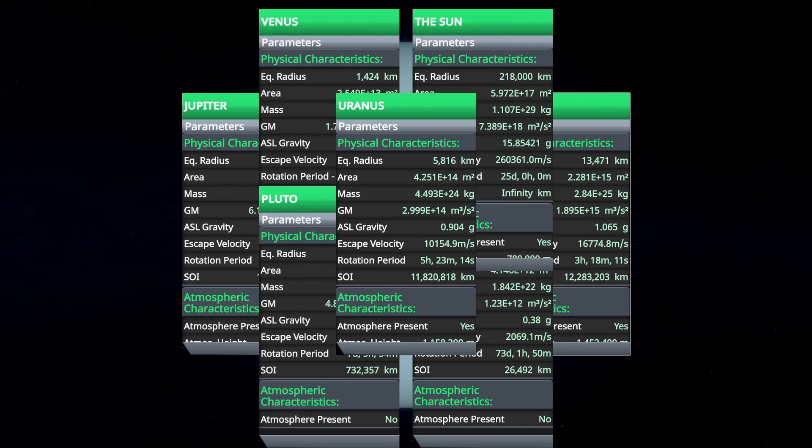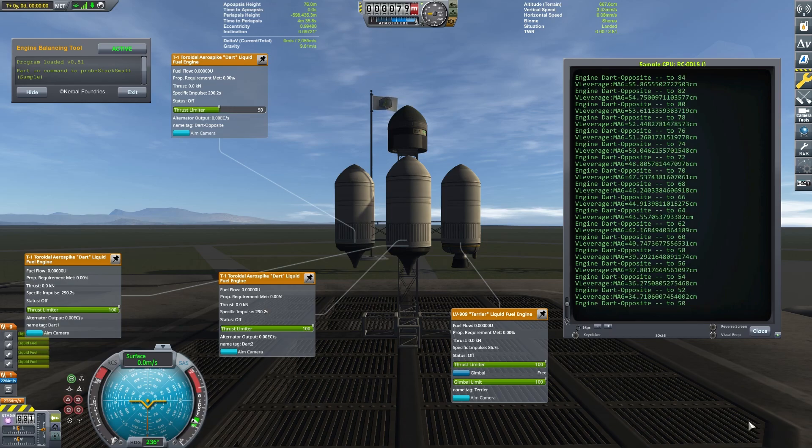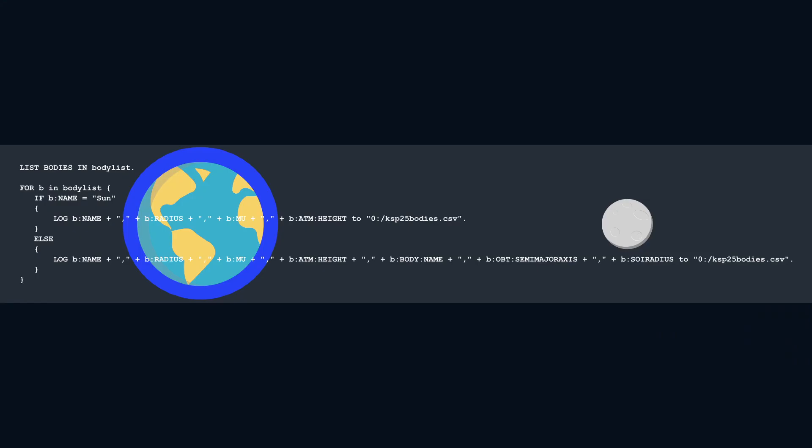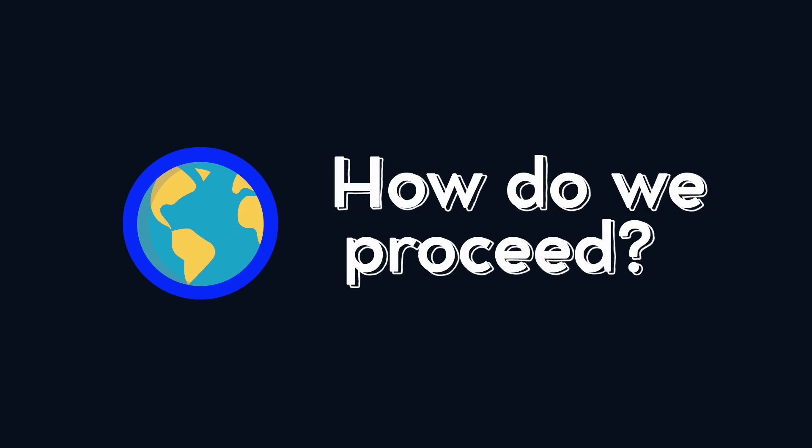To do this, we will use a KOS mod which provides a programming language and allows us to interact with the game. With this piece of code, we will be able to output all the characteristics we need in a CSV file. We import this data into a spreadsheet, and it's in this document that we will do all the calculations we need. But before doing them, we must know what we want to calculate and which formulas will have to be used.